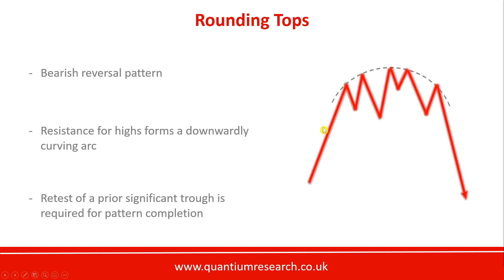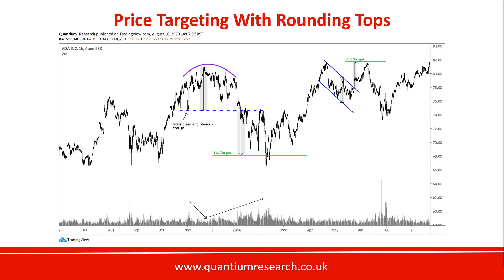On volume, it should again be contracting through the first part of the pattern and then expanding into the breakout as the price starts to fall. Let's look at an example of a rounding top in Visa shares, where each candle represents one hour.